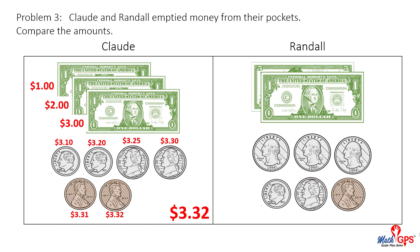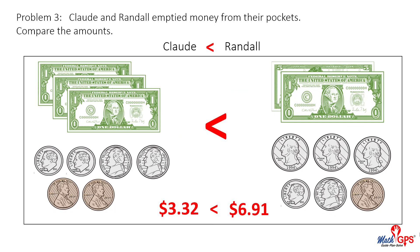Now count with me to find Randall's amount of money: five dollars, six dollars, six twenty-five, six fifty, six seventy-five, six eighty-five, six ninety, six ninety-one. Randall had six dollars and ninety-one cents. Now compare these two amounts. Claude has less money than Randall because three dollars and thirty-two cents is less than six dollars and ninety-one cents.